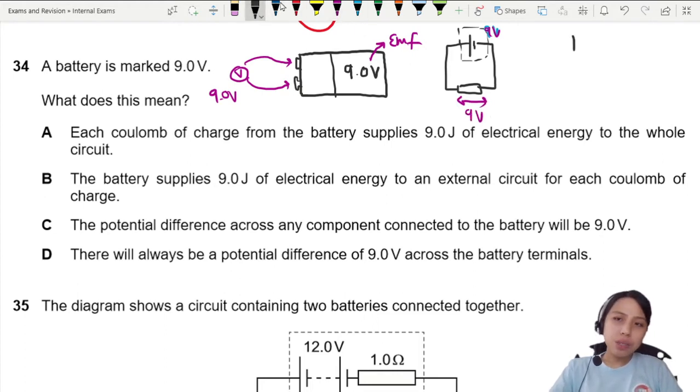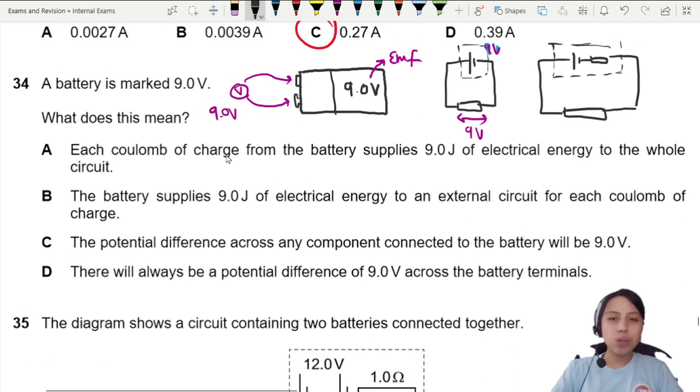But if your battery has internal resistance, you may not get 9 volts for your external circuit. In this case, the external circuit only got one resistor. Let's look through the solutions.